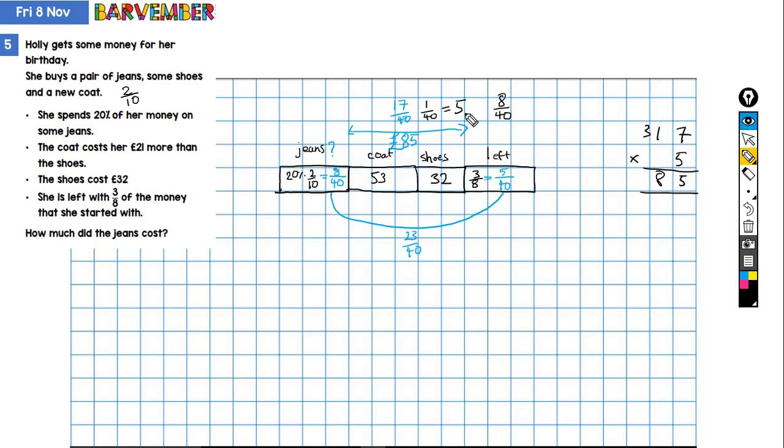It must be five fortieths, which is forty, so we know that the jeans cost forty pounds. I hope that makes sense, and I hope it helps.